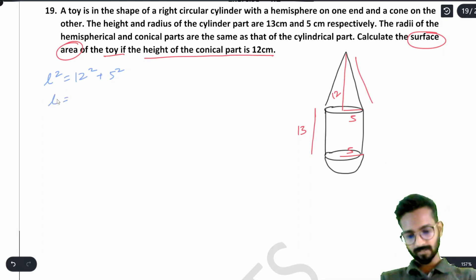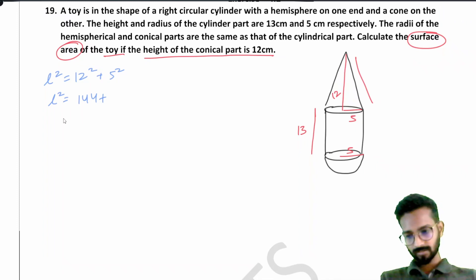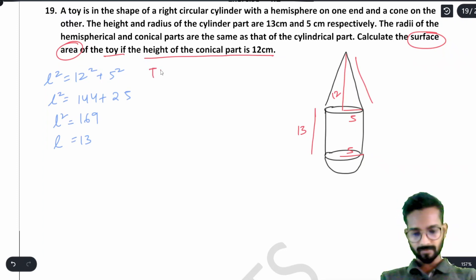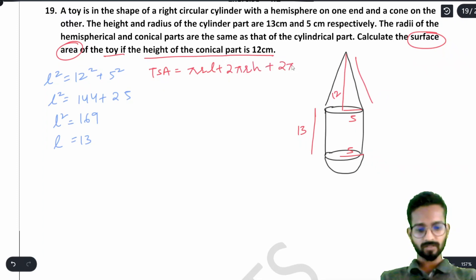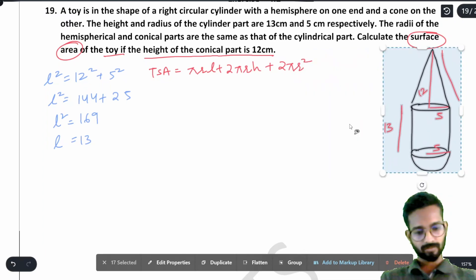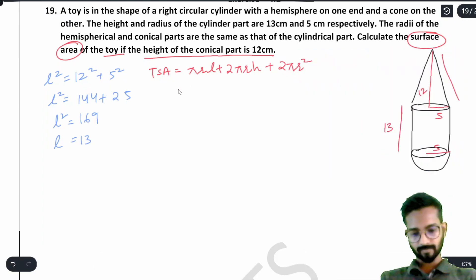To find surface area we need the slant height of the cone: l² = 12² + 5² = 144 + 25 = 169, so l = 13 cm. Total surface area = π r l (cone) + 2π r h (cylinder) + 2π r² (hemisphere) = π r (l + 2h + 2r).